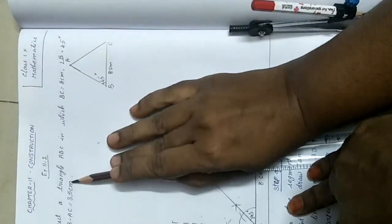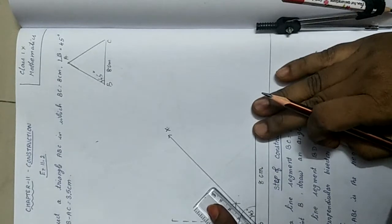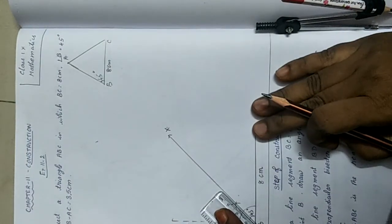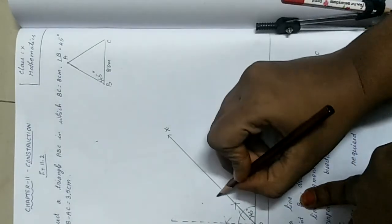Now, what is the difference given? It is 3.5 cm. You measure 3.5 cm in your ruler itself and mark it as D.